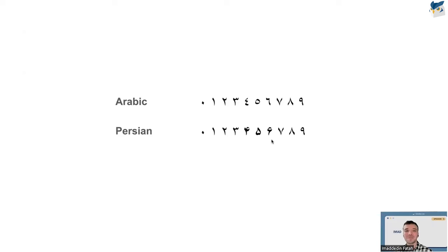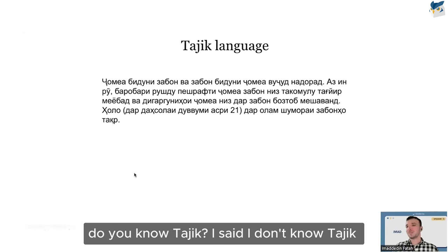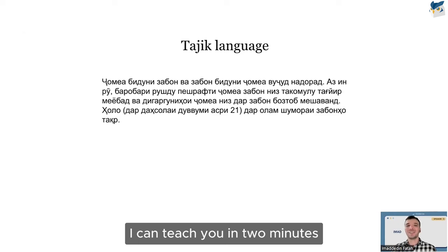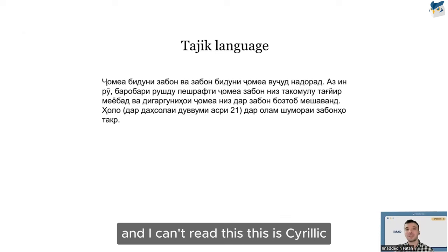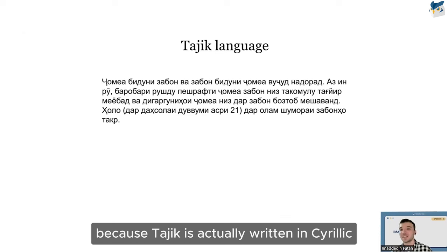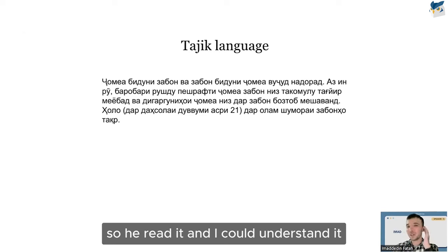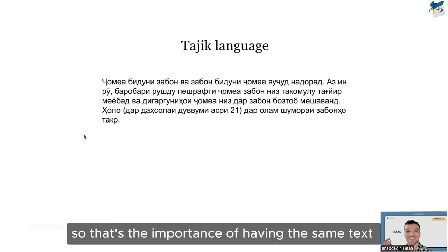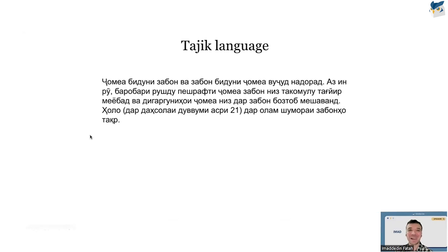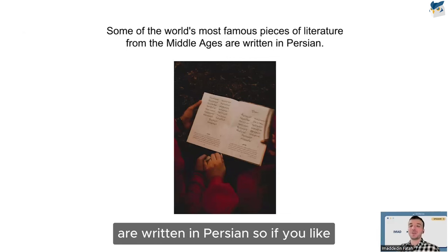One day my colleague Michael told me, 'Imad, do you know Tajik?' I said no. He said, 'I can teach you in two minutes,' and started reading something in Cyrillic script — because Tajik is actually written in Cyrillic. I can't read Cyrillic, but as he read aloud I understood everything, because it was Persian. He couldn't understand it himself, but I could understand it perfectly as spoken. That shows the importance of having the same spoken language even when the scripts differ.